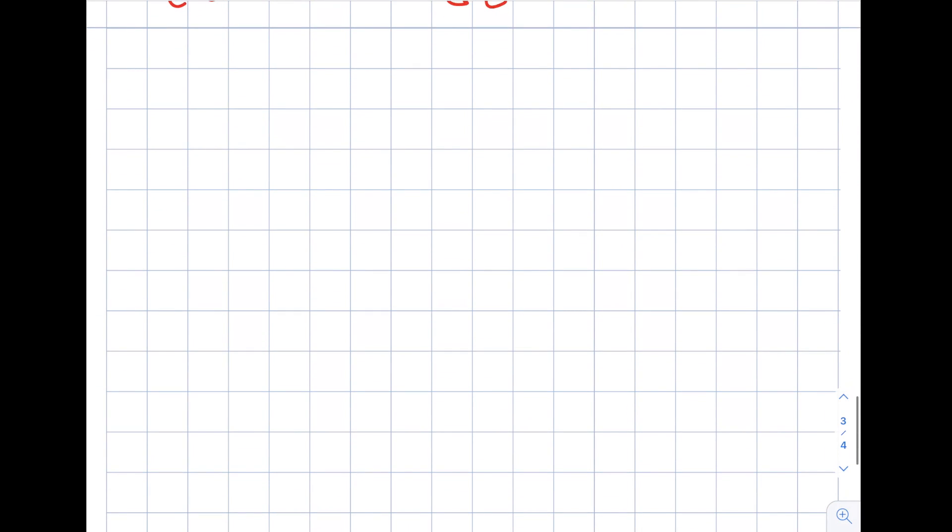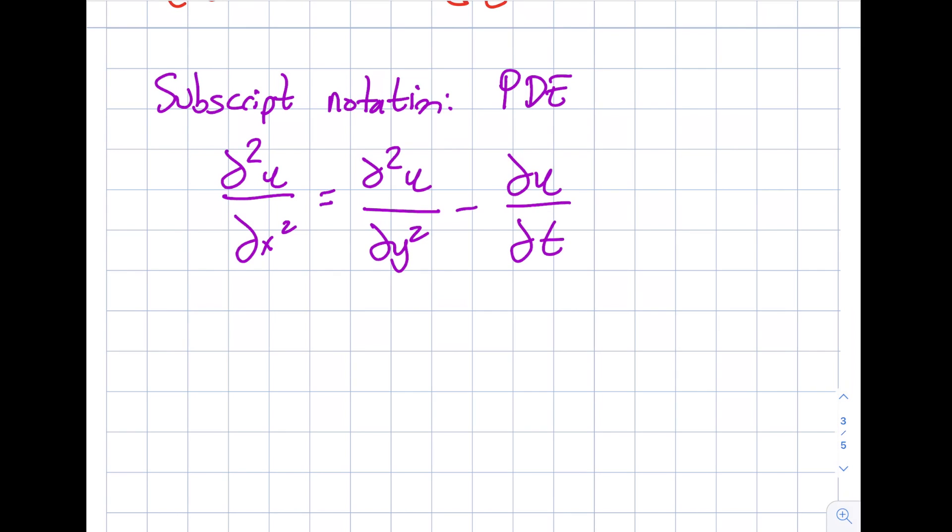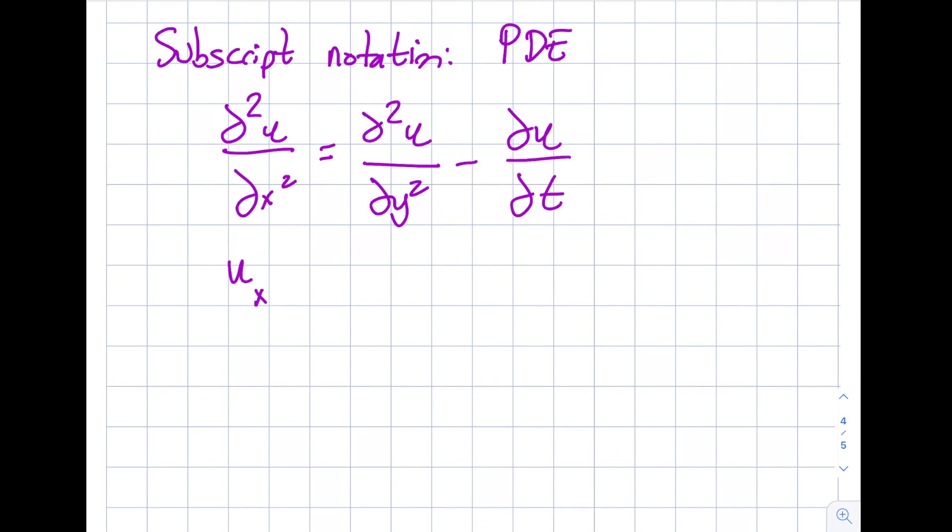I will also introduce subscript notation. One thing we need to be careful about is this is typically used with PDEs, not ODEs. The good thing is it indicates my independent variable. Let's write a PDE: ∂²u/∂x² = ∂²u/∂y² - ∂u/∂t. Why is this a PDE not an ODE? Well, you can see x, y, t, where u is the dependent variable. I can write this as uₓₓ = u_yy - uₜ.